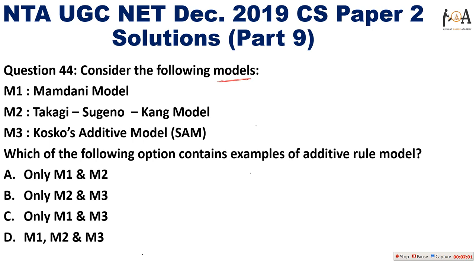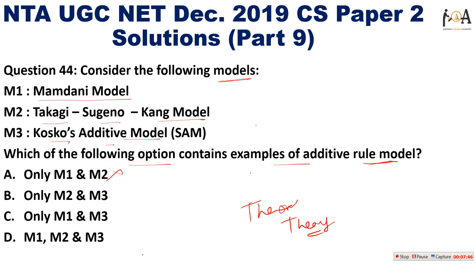The next question: consider the following models — M1 is the Mamdani model, M2 is the Takagi-Sugeno-Kang model, and M3 is the Cosco's Additive model. The question asks which option contains examples of the additive rule model. Since M3 is Cosco's Additive model and M2 is Takagi-Sugeno-Kang model, Option B (M2 and M3) is the correct answer. This is purely a theoretical/knowledge-based question.